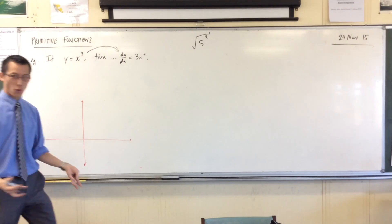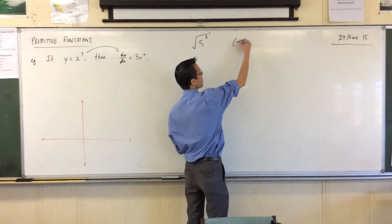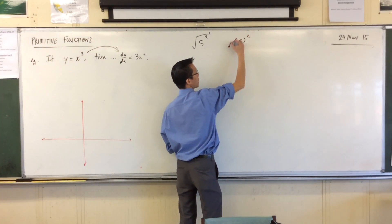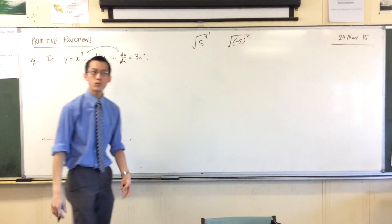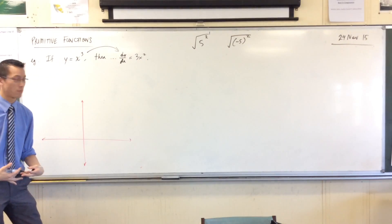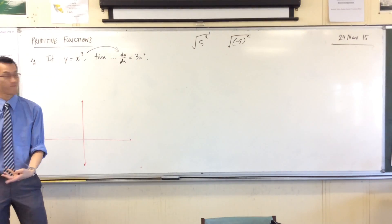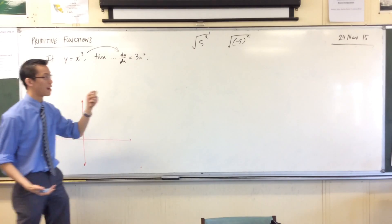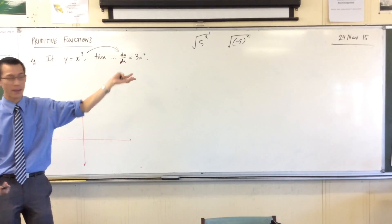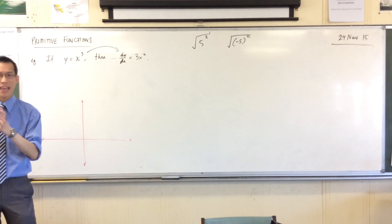However, this doesn't always work. If you take a number like negative five and then you square it and then you take the square root, you do not end back where you came from. You know something about it, you know the magnitude of that number, in other words, you know the absolute value of the number.